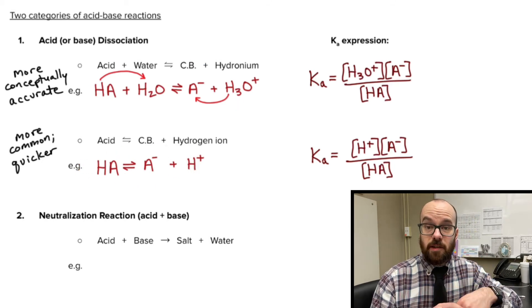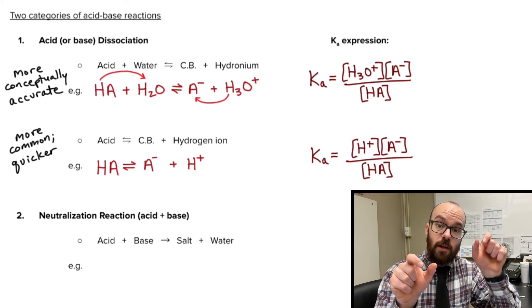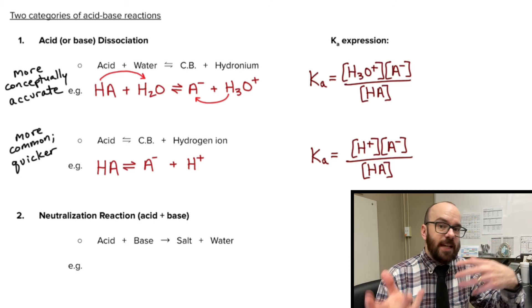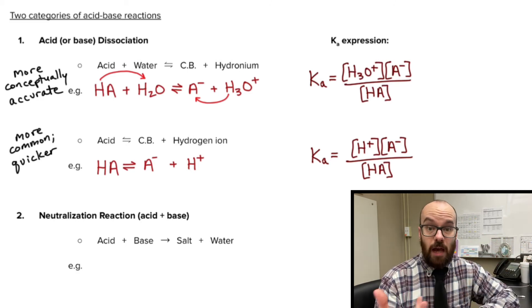So that's an acid dissociation. That acid will split off a hydrogen and form a hydronium ion and the conjugate base. And this is happening in solution all the time if you have an acid.